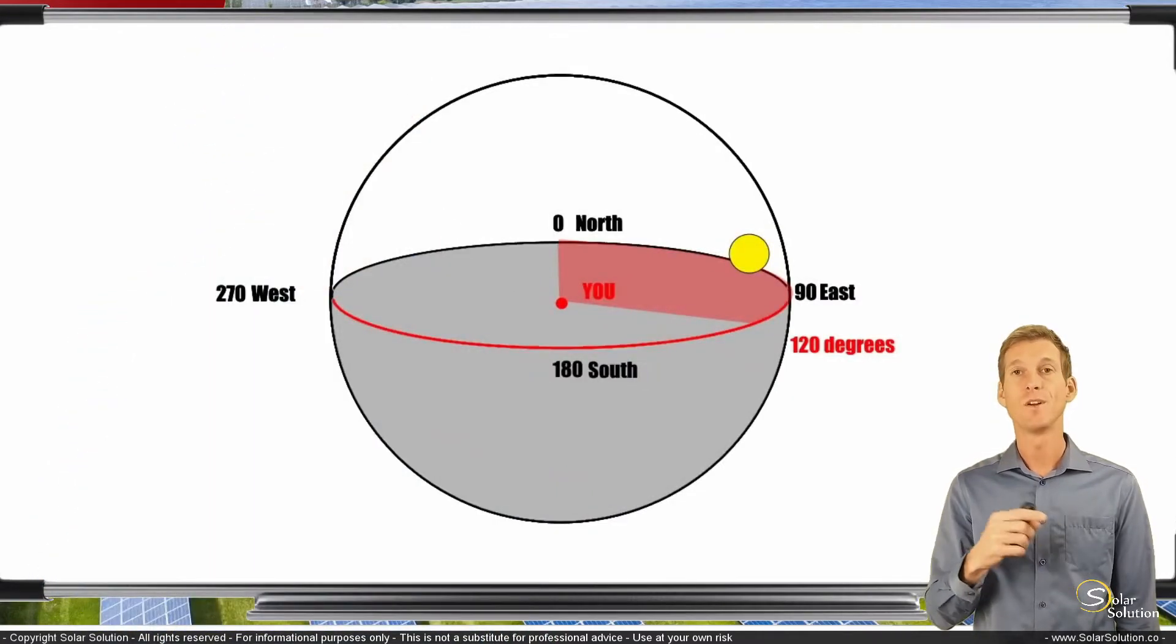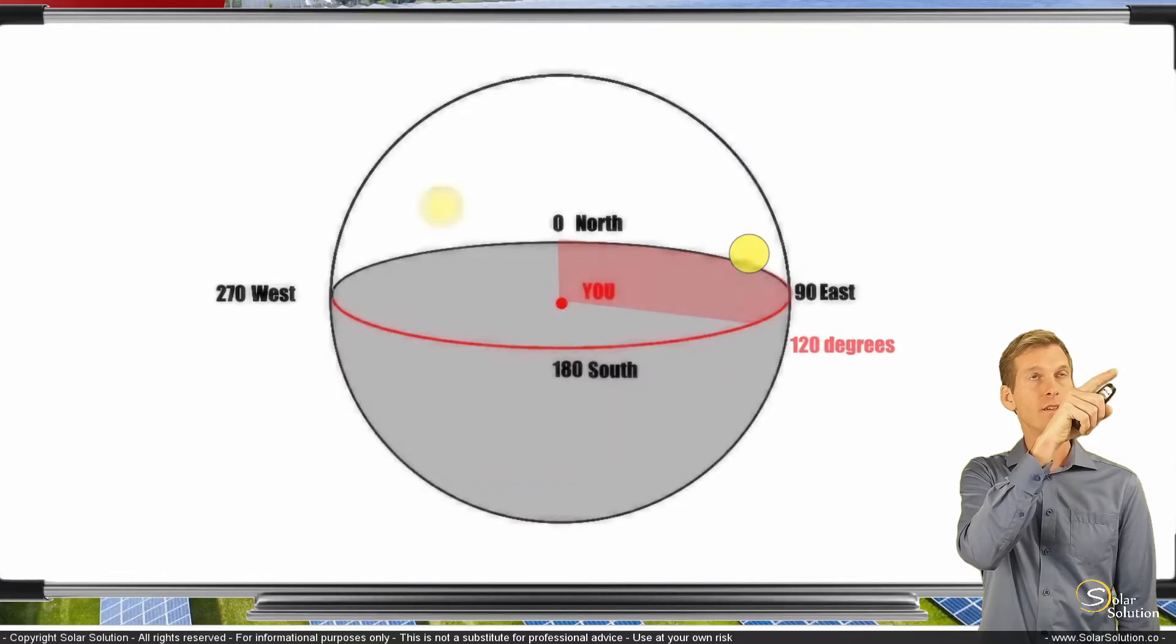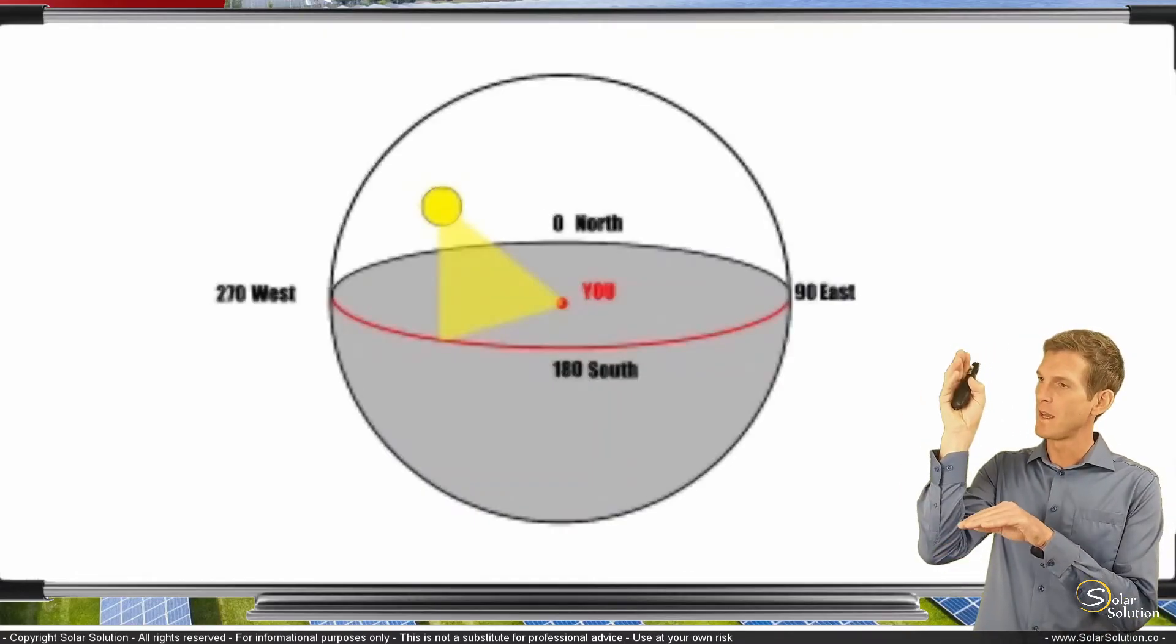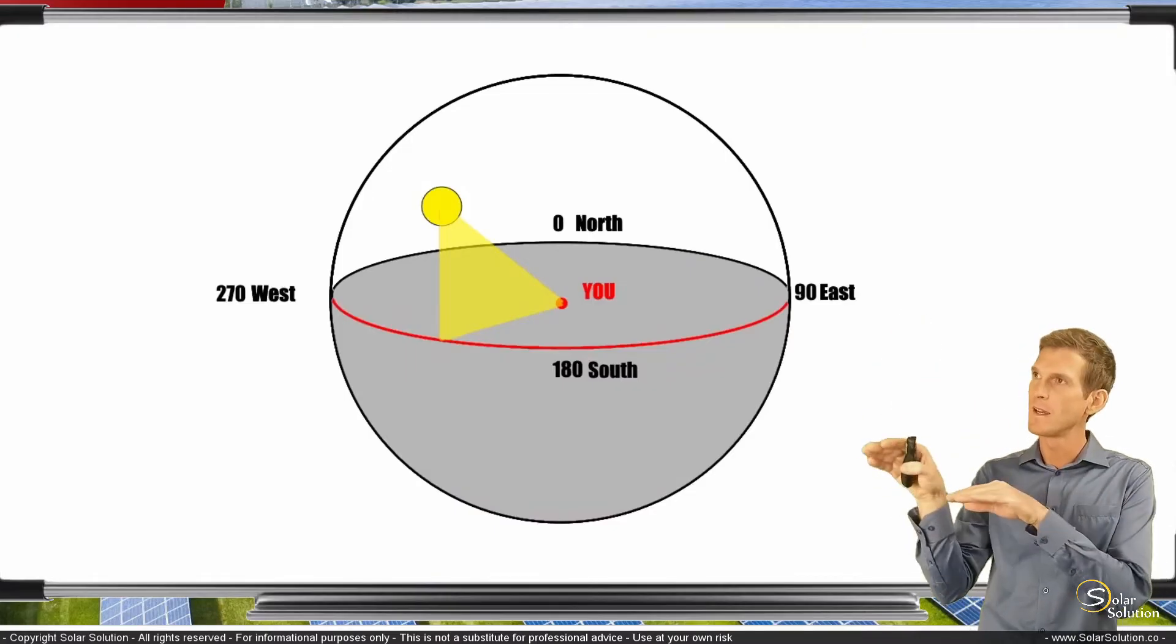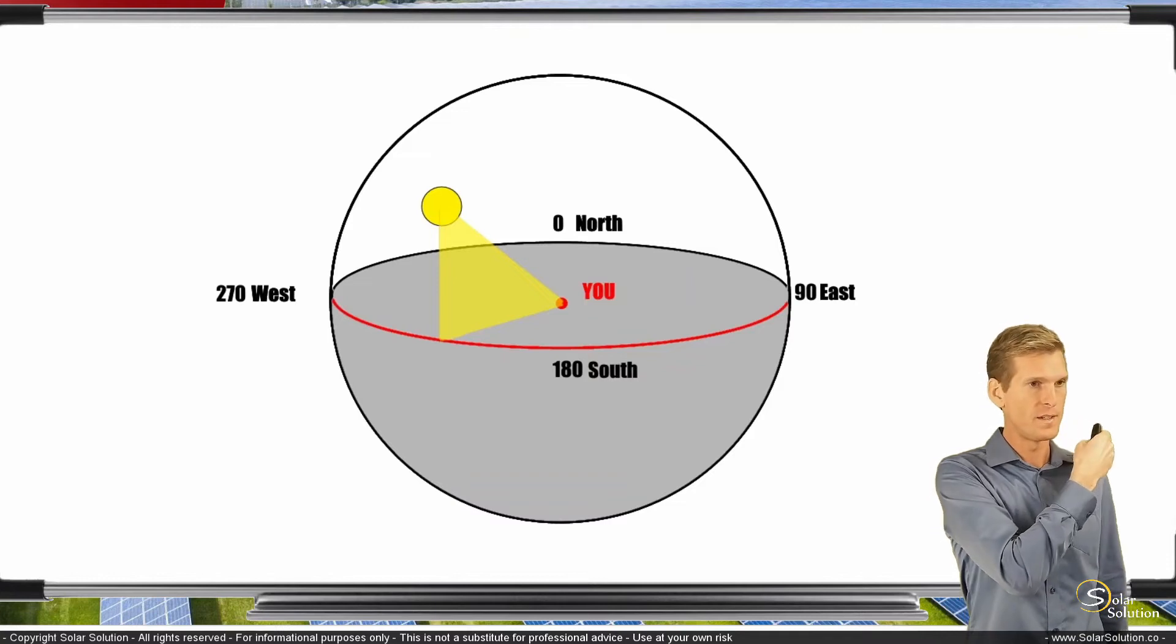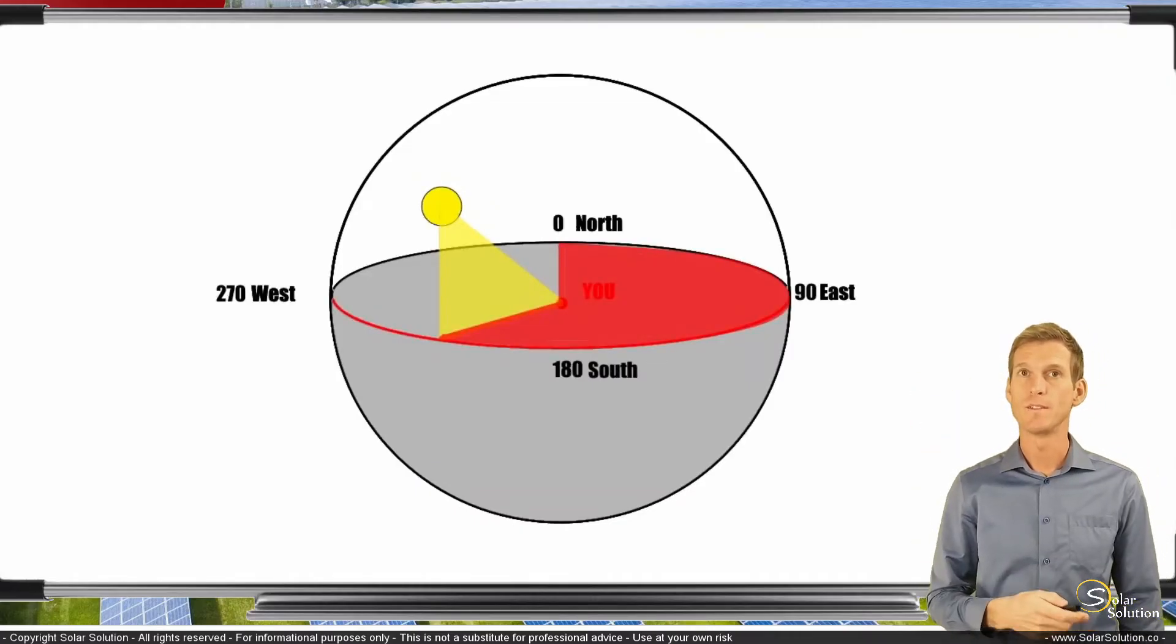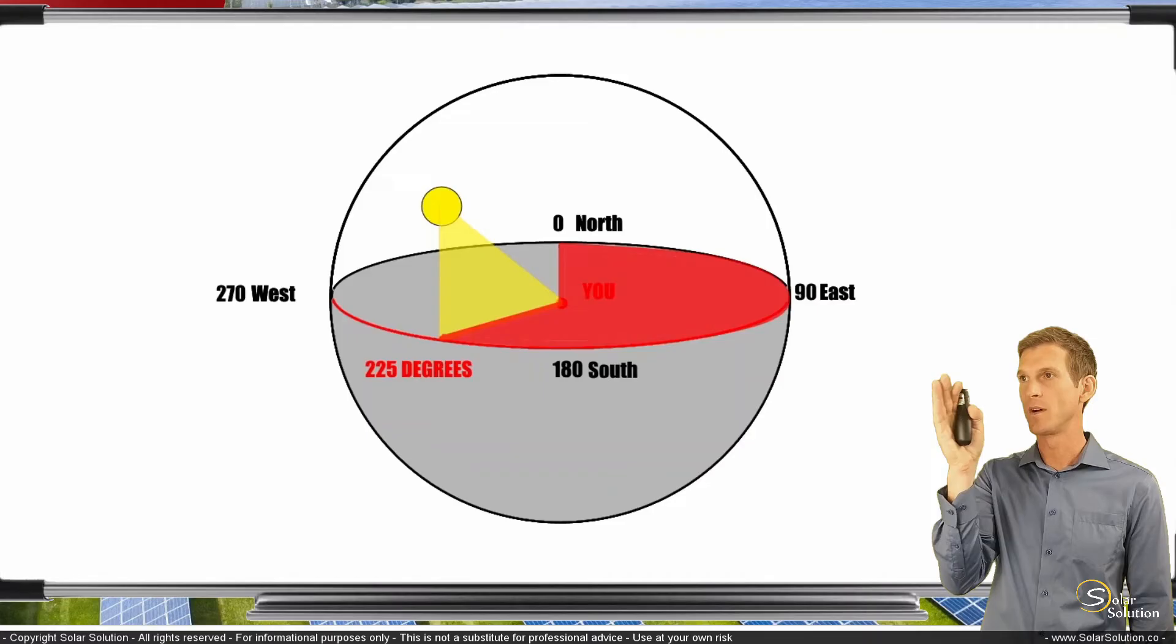Let's do the same exercise but for somewhere later on during the day. The first point you were looking at the sun was in the morning, so as the day progresses it gets higher and higher, somewhere around noon it's at its highest point and then starts to go down. Then somewhere late in the afternoon you are looking at the sun, drawing this imaginary triangle, and now you count from zero degrees, from north, until you get to the point where the sun is right above the horizon. So let's say in this situation it's somewhere around 225 degrees.